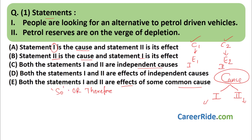To apply the tip, combine the sentences using 'so' or 'therefore'. Try: statement one, therefore, statement two — and check if it makes sense. If not, try: statement two, therefore, statement one. For question one: 'People are looking for an alternative to petrol-driven vehicles, therefore petrol reserves are on the verge of depletion' — this does not make sense. So option one is ruled out.